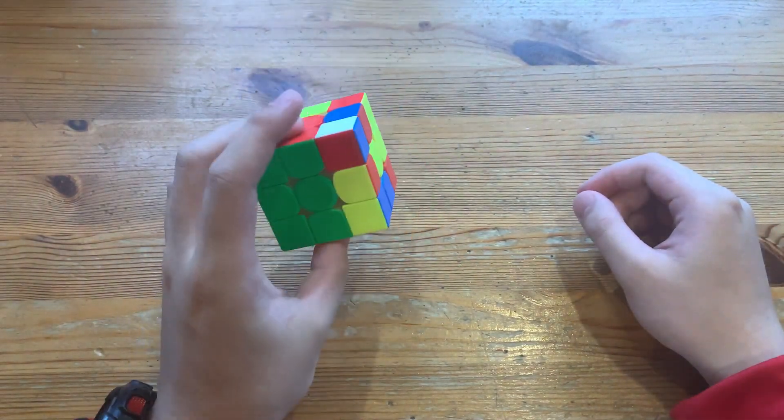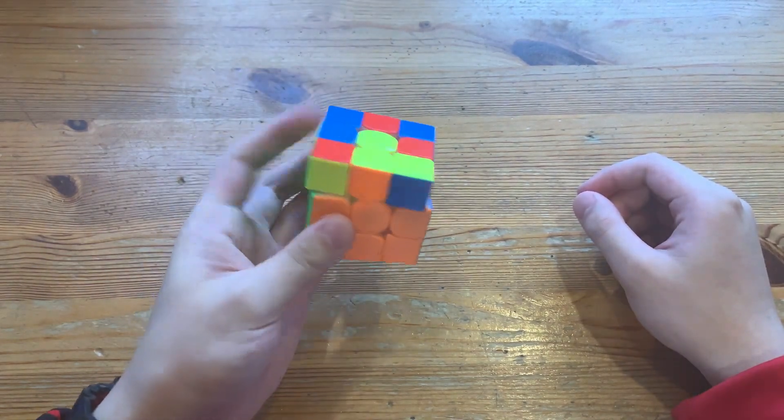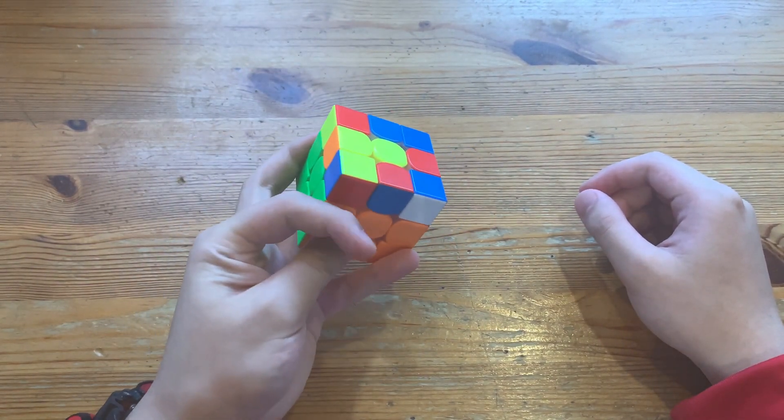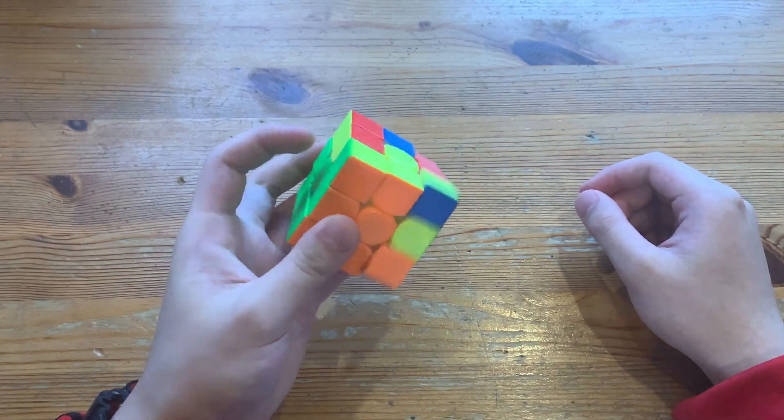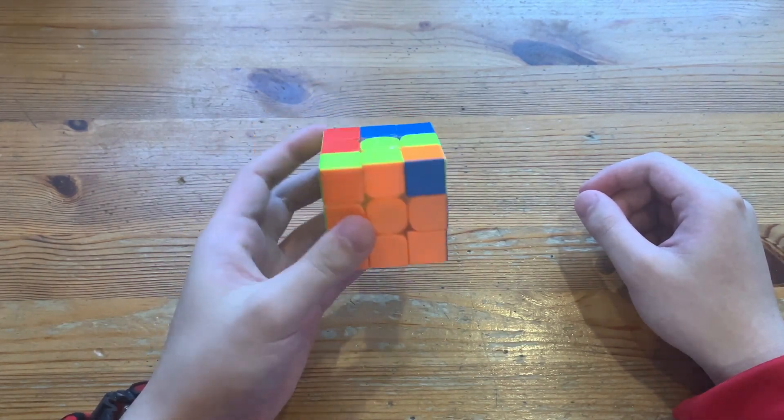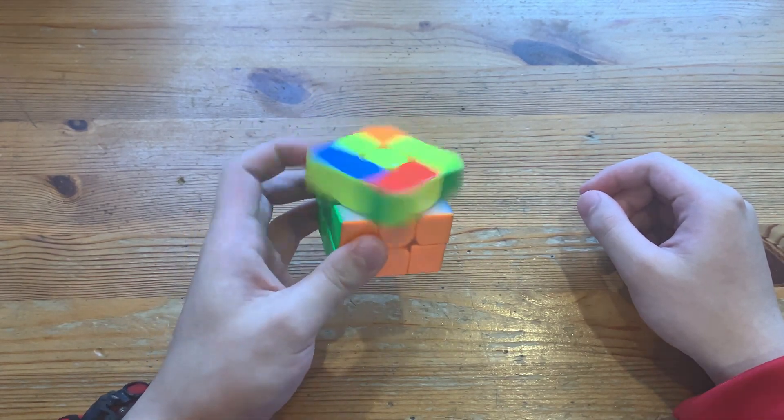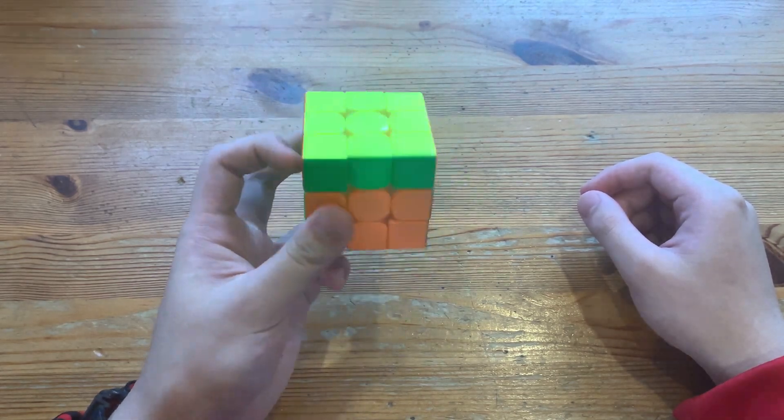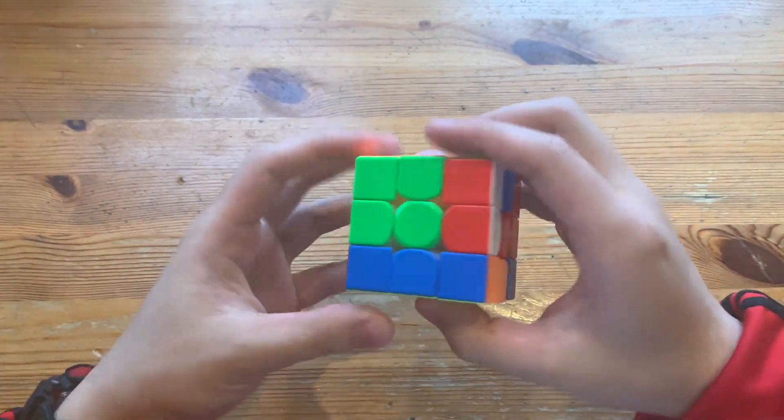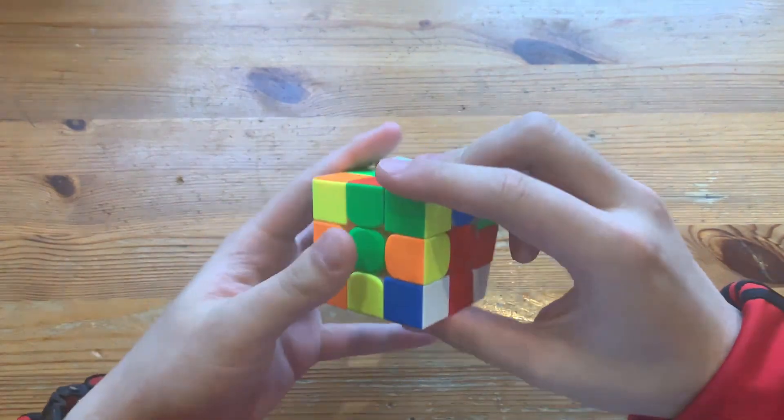And then here, instead of doing U prime U prime, he did a U U like that, solved the pair normally. And then here instead of doing U, he did a U prime U prime U prime, which is obviously worse, but it's just the hesitation. And I'll be showing the solution again.